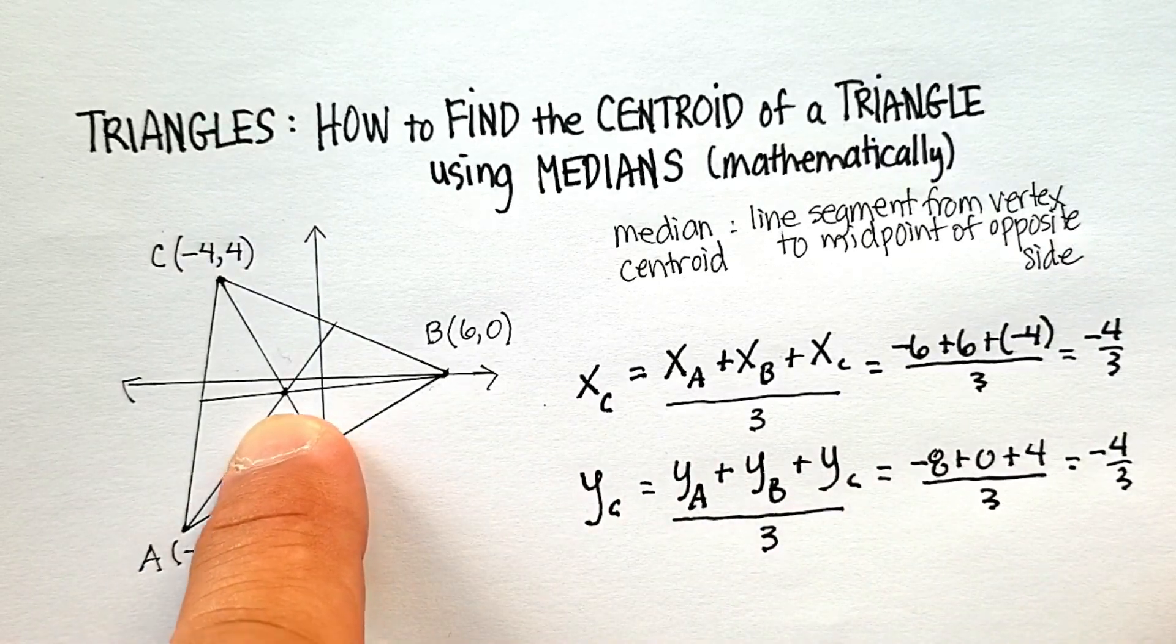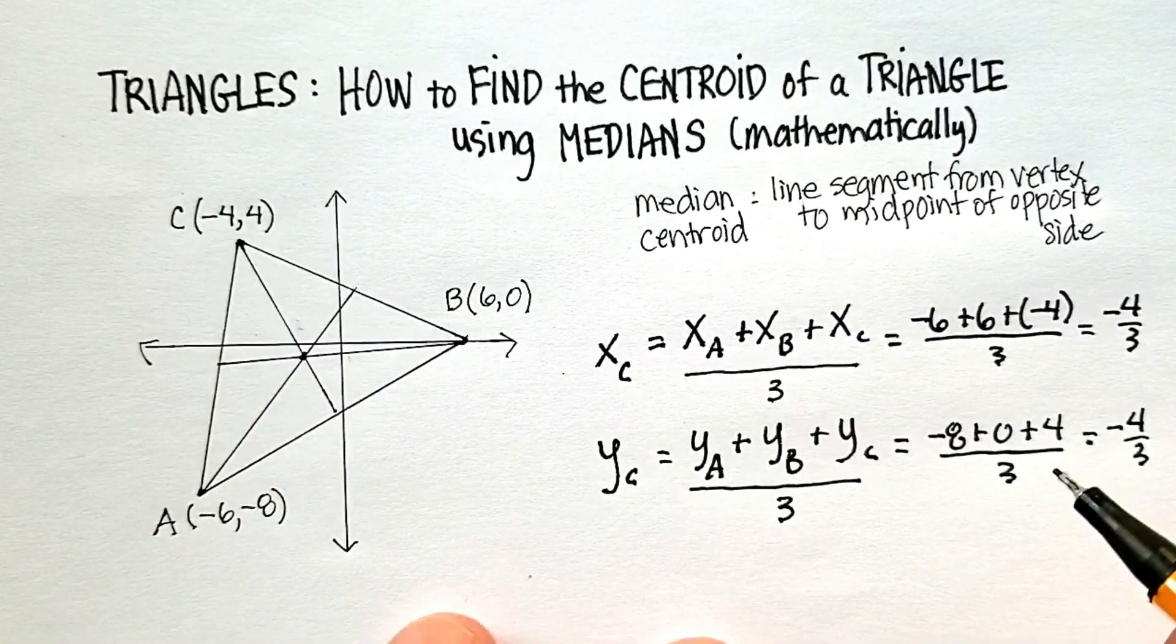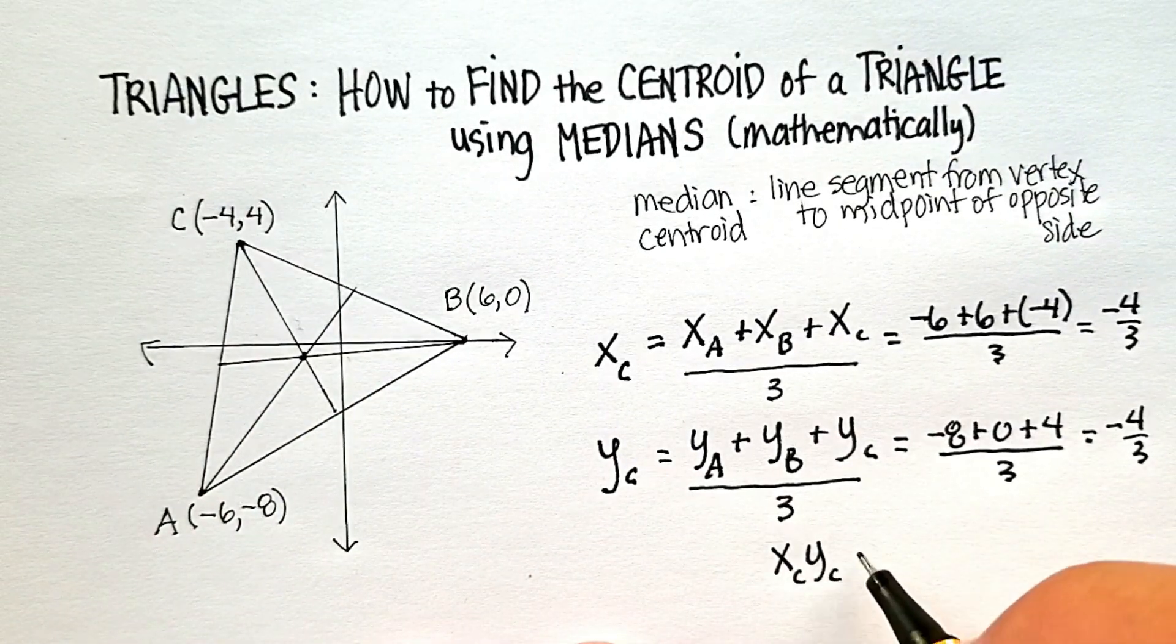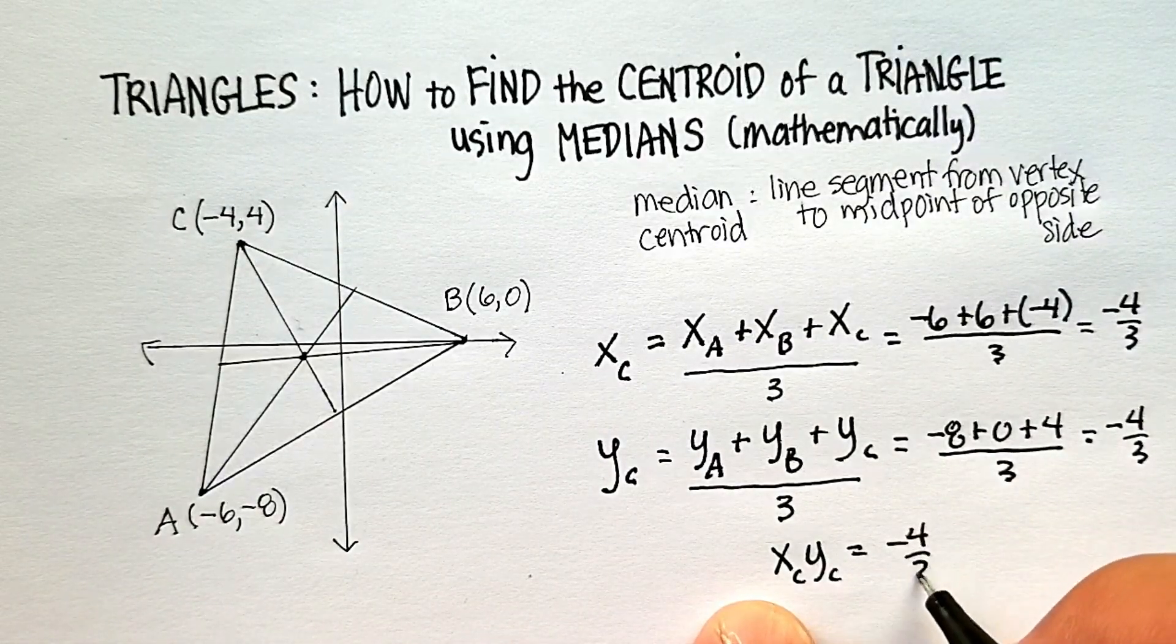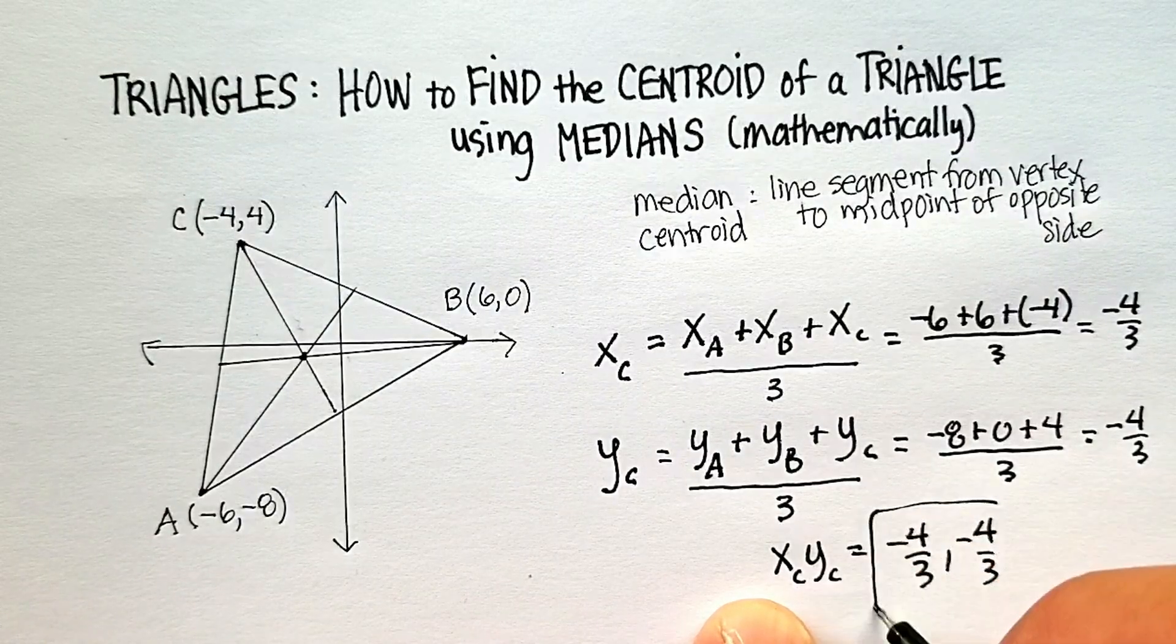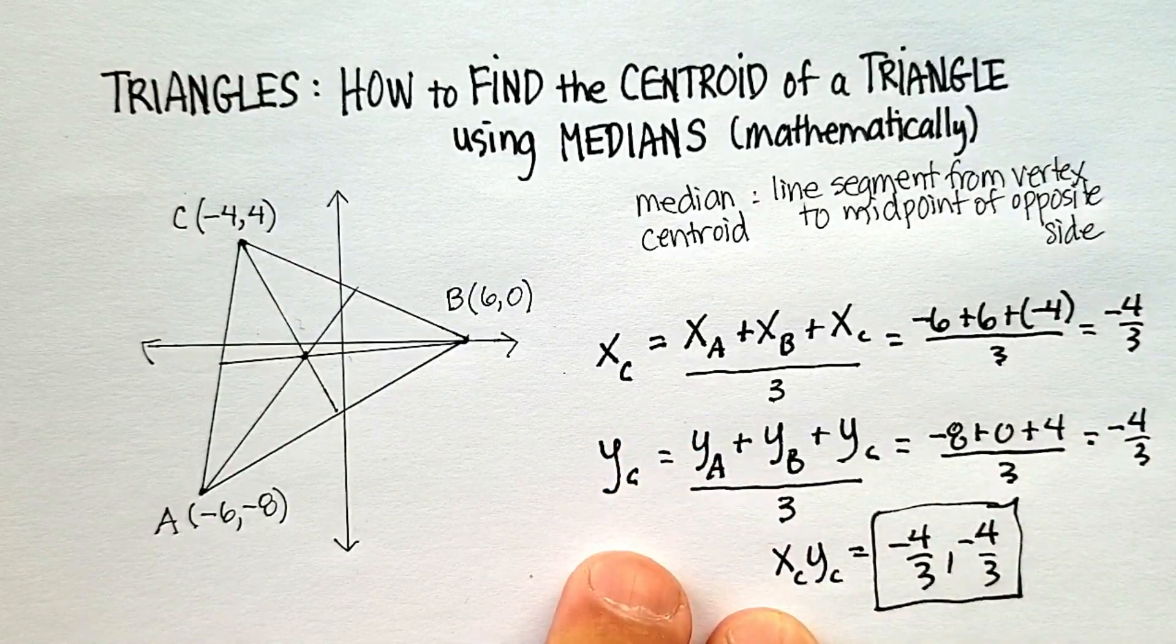And even though it's not quite proportional, it's pretty much in the right vicinity. So, it looks like my centroid, my x, y centroid, is located at negative 4 thirds and negative 4 thirds. And that would be my answer using this formula. I hope that was helpful.